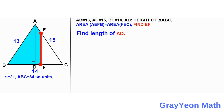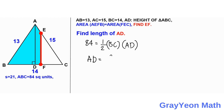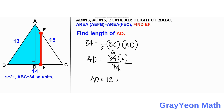Next thing that we need to do is we need to find the length of AD. We know that the area is equal to 84, and that is equal to one half times the base BC times AD. So AD is equal to 84 times 2 over BC, BC is equal to 14. So 84 times 2 divided by 14 gives us AD is equal to 12 units.